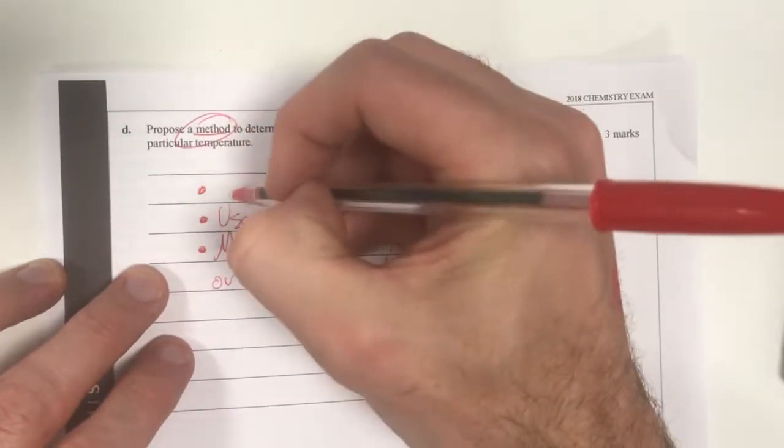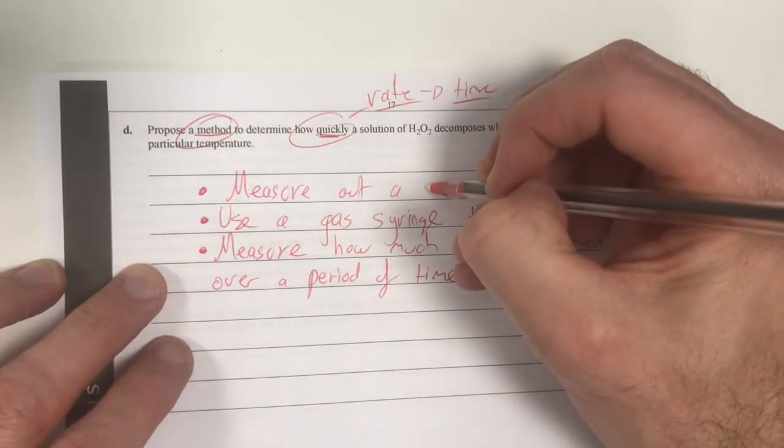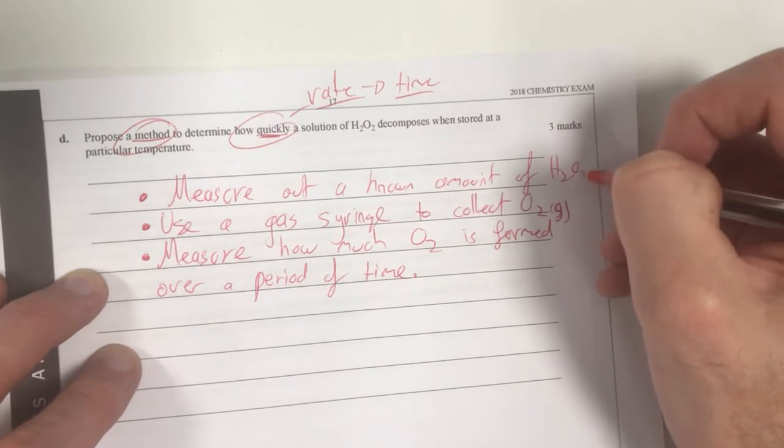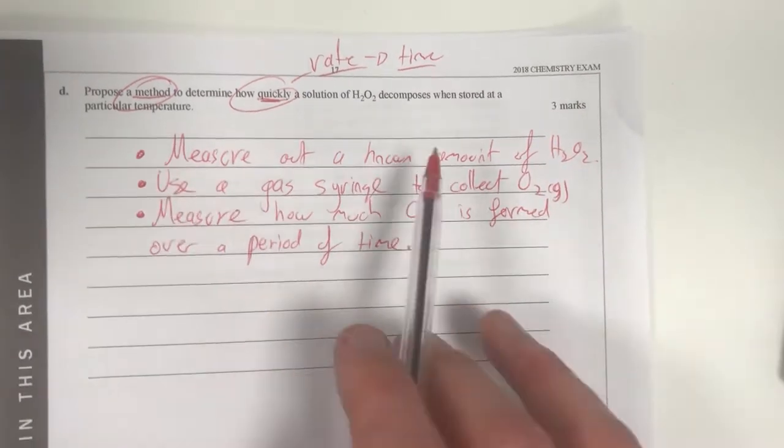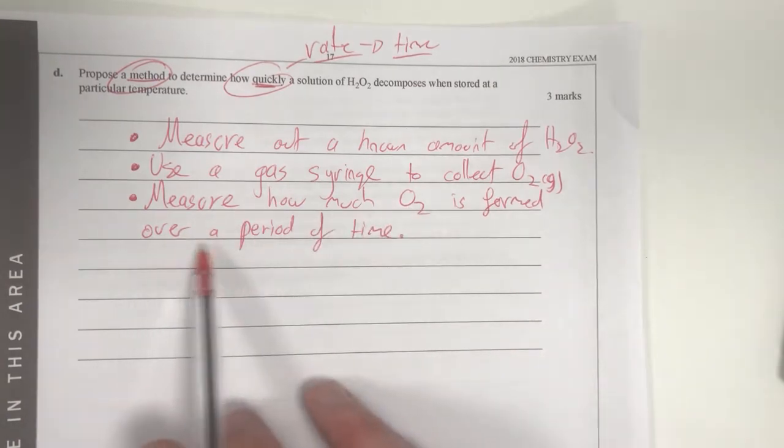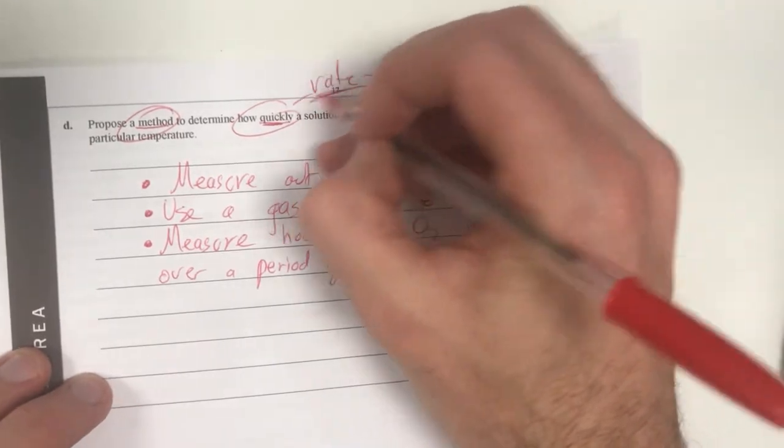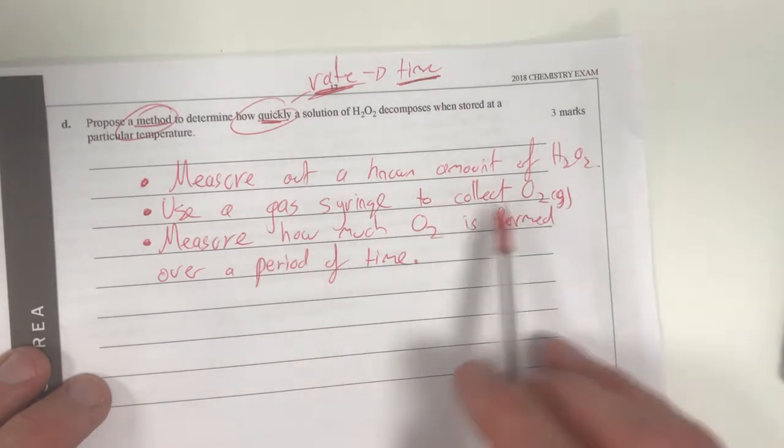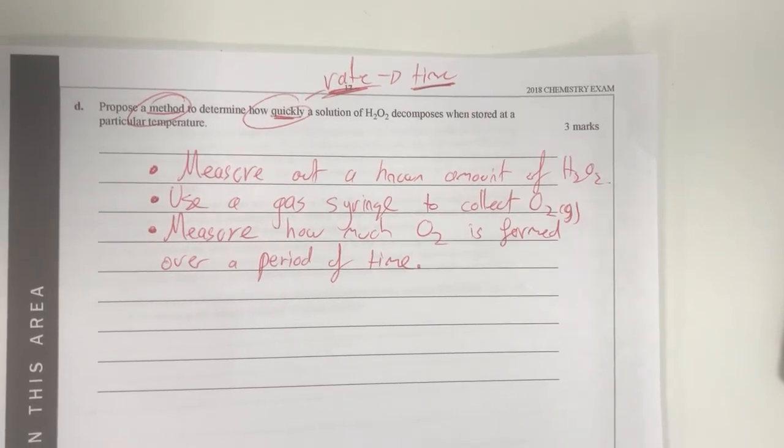Let's start off with what I would have to do before this. I would probably want to measure out a known amount of H₂O₂ to start off with. So if I measure out how much I have initially, I'll have a starting point. I'll then use my gas syringe to collect my O₂, and I'll measure how much O₂ is formed over a period of time. I think the key point is understanding that it's measuring rates, so therefore there needs to be something to do with time in there.